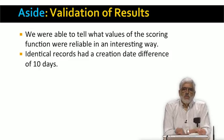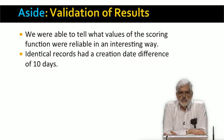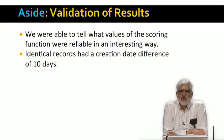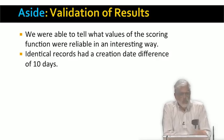First, remember that there's a gold standard: 7,000 pairs of identical records that we could assume represented the same person. For these pairs, we looked at the creation dates at Companies A and B. It turns out that there was a 10-day lag on average between the time the record was created by Company A and the time that the same person went to Company B to begin their service.